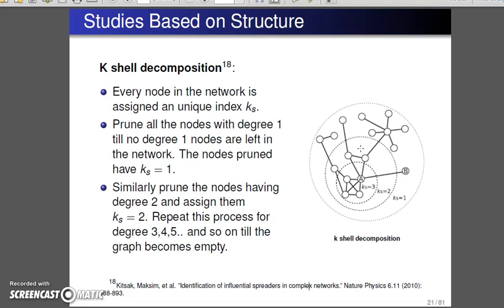These nodes which have been pruned have been assigned an index which is Ks, which is basically nothing but its pruning index or the degree based on which it has been pruned.